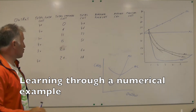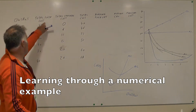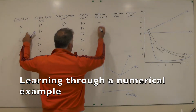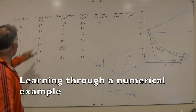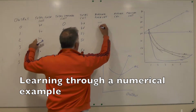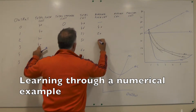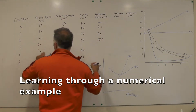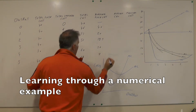Then we've got the average fixed cost, which is quite easy to work out — it's the total fixed cost divided by the output. At zero output we leave it blank since it's effectively infinity. Then: 40 divided by 1 is 40; 40 divided by 2 is 20; 40 divided by 3 is 13.33; 40 divided by 4 is 10; and 40 divided by 5 is 8.